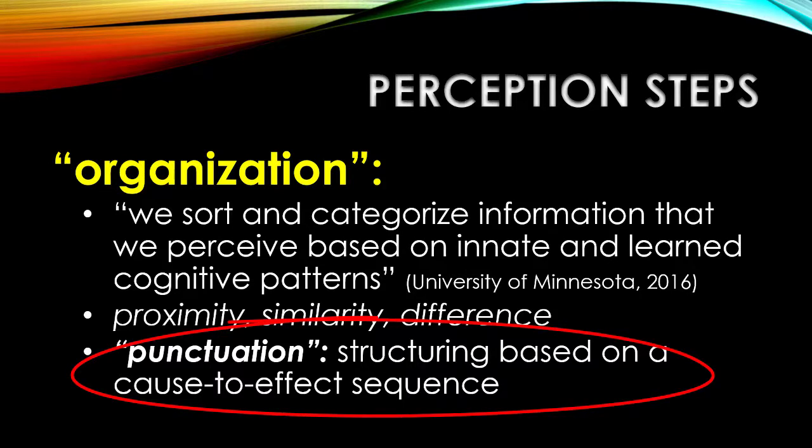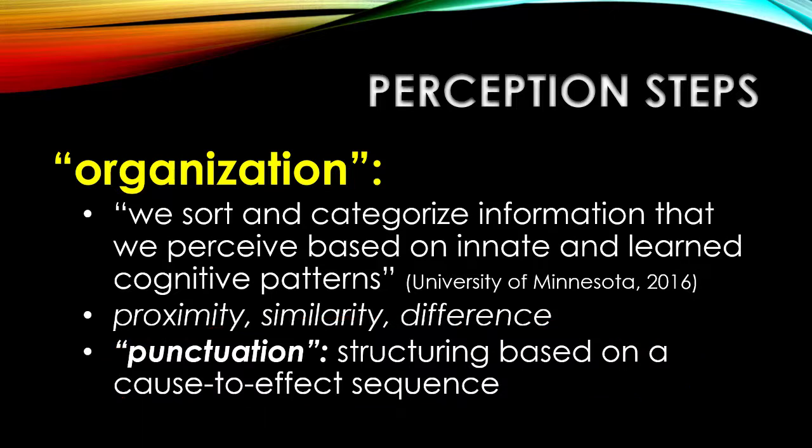Punctuation, in the context of cognitive perception, is about structuring what we're observing based on our innate desire to figure out a stimulus-response or cause-to-effect sequence. If something happens and then something else happens, there is a real imperative in our mind that wants to figure out: did one thing end up causing something else? Here's a simple but poignant example of a family conflict that happens because the two parties involved engaged in the structural process of punctuation in different ways, with different observations at their disposal.